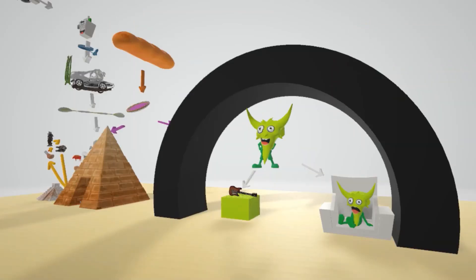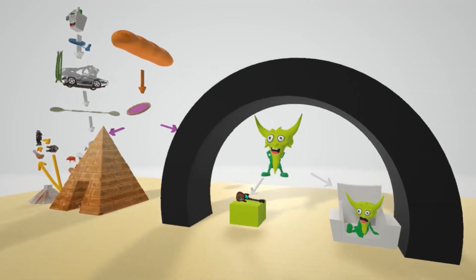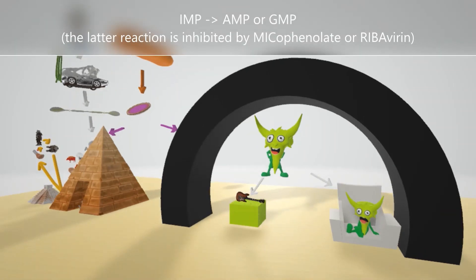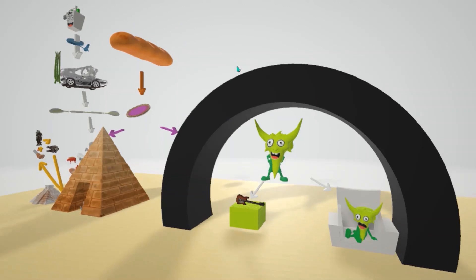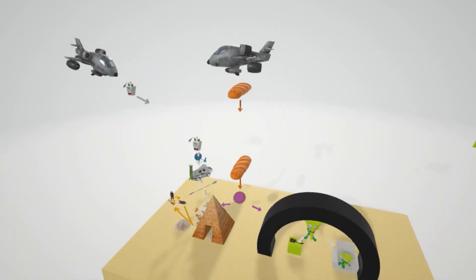IMP can be converted either to AMP, represented by the guitar amp, or to GMP — imagine the IMP turning into a gimp for GMP. A microphone represents mycophenolate and a rabbit represents ribavirin, both inhibiting the IMP→GMP step. That concludes the scene on de novo pyrimidine and purine synthesis.